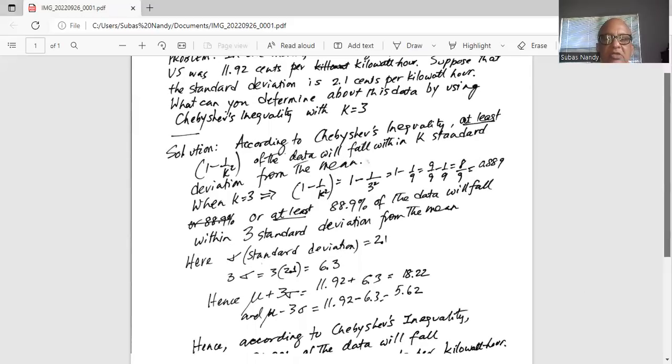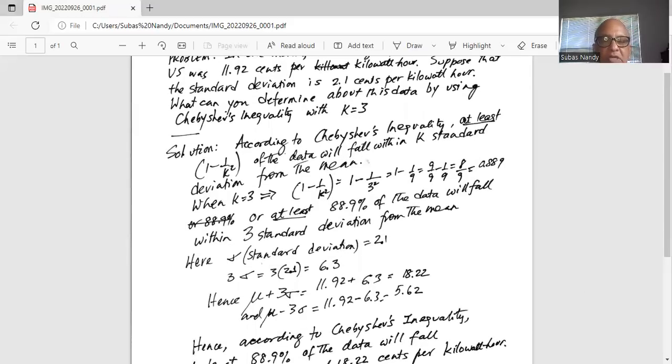Now here, standard deviation is 2.1, and 3 times sigma is 3 times 2.1, which equals 6.3. So mu plus 3 sigma is 11.92 plus 6.3, which is 18.22, and mu minus 3 sigma is 11.92 minus 6.3, which is 5.62.